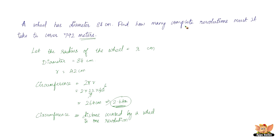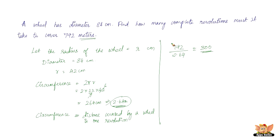How many complete revolutions must it take to cover 792 meters? All we need to do is divide 792 meters by 2.64 meters to find the number of revolutions. 792 divided by 2.64 gives exactly 300. So the number of complete revolutions the wheel must take to cover 792 meters is 300 revolutions.